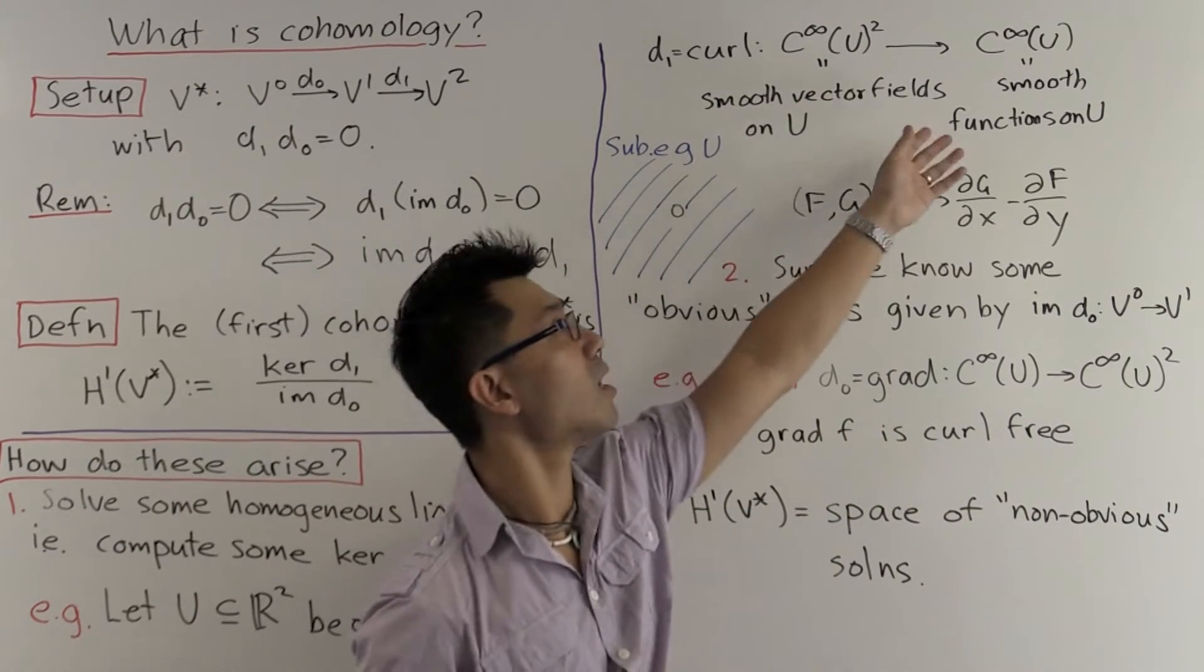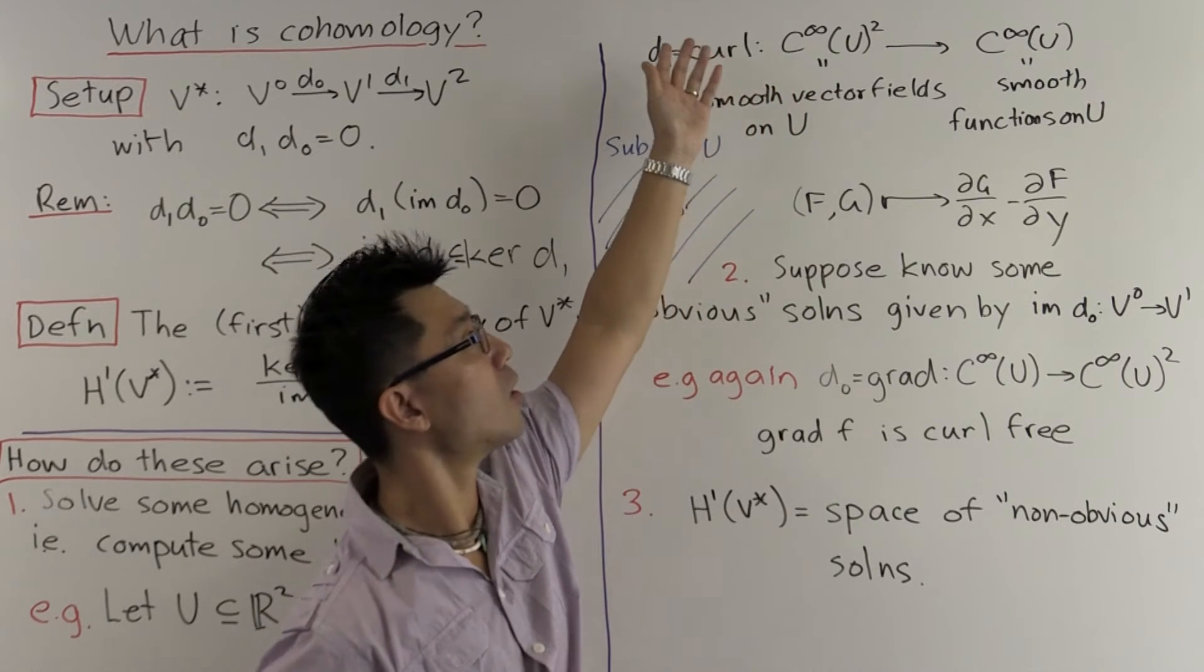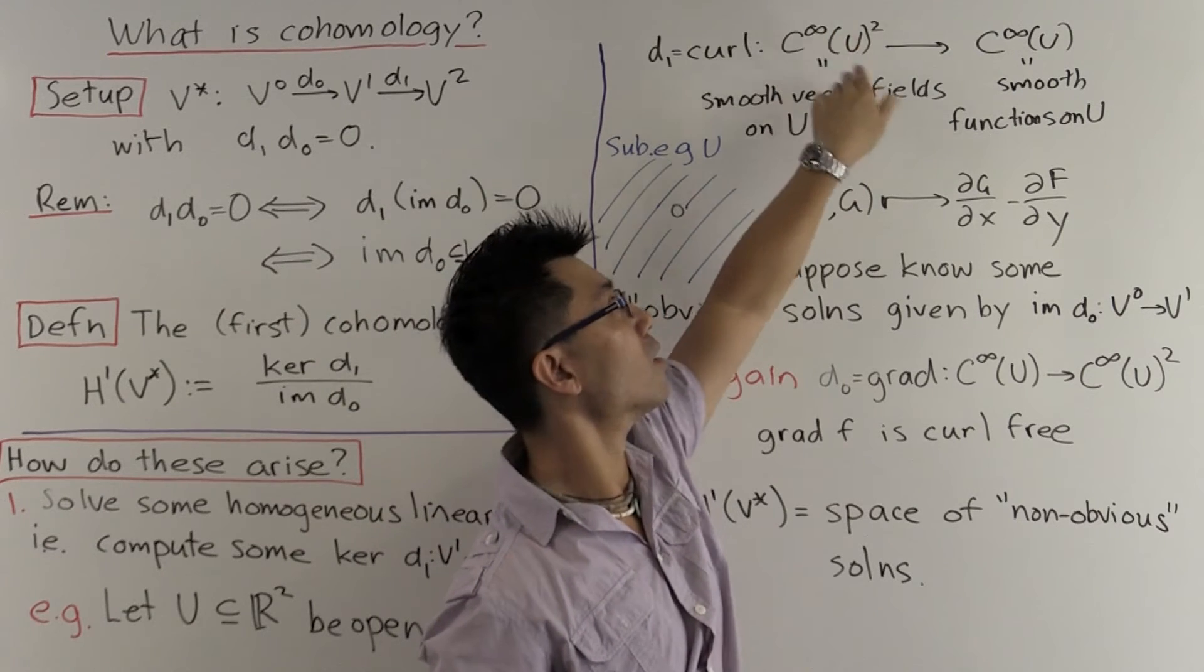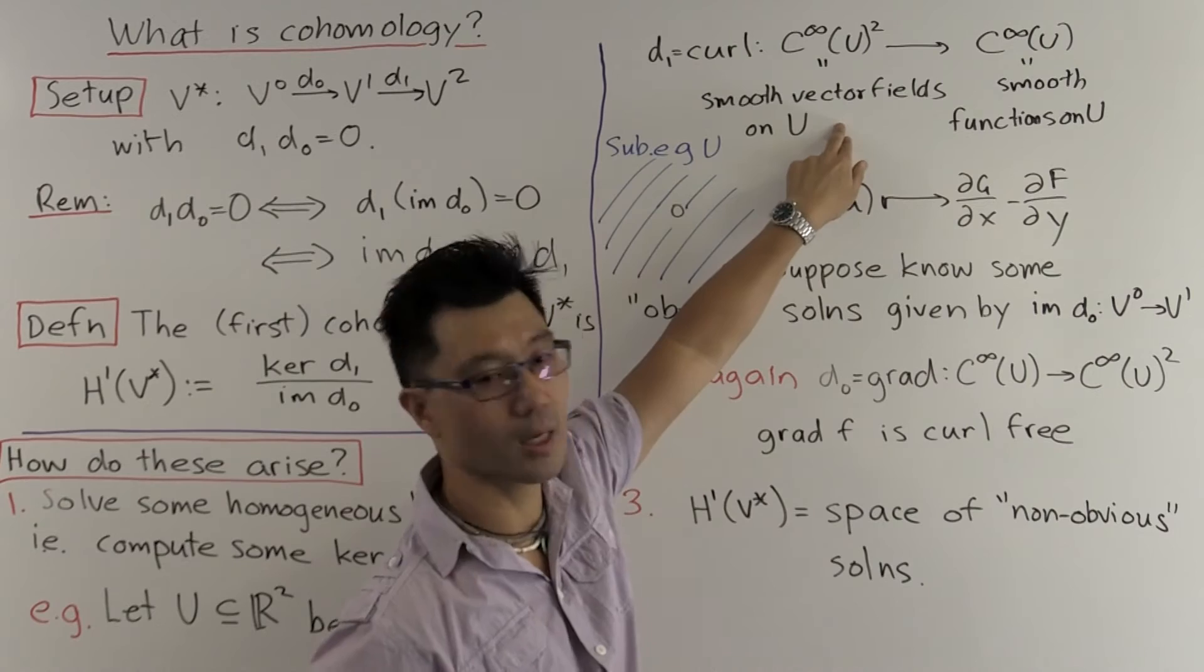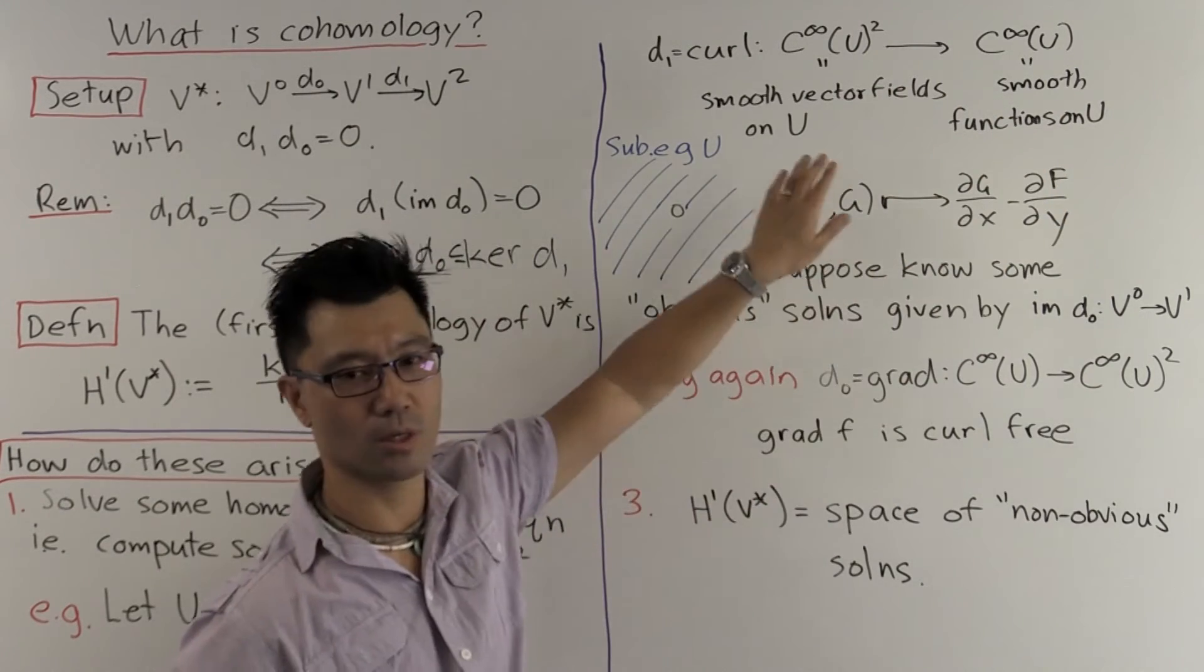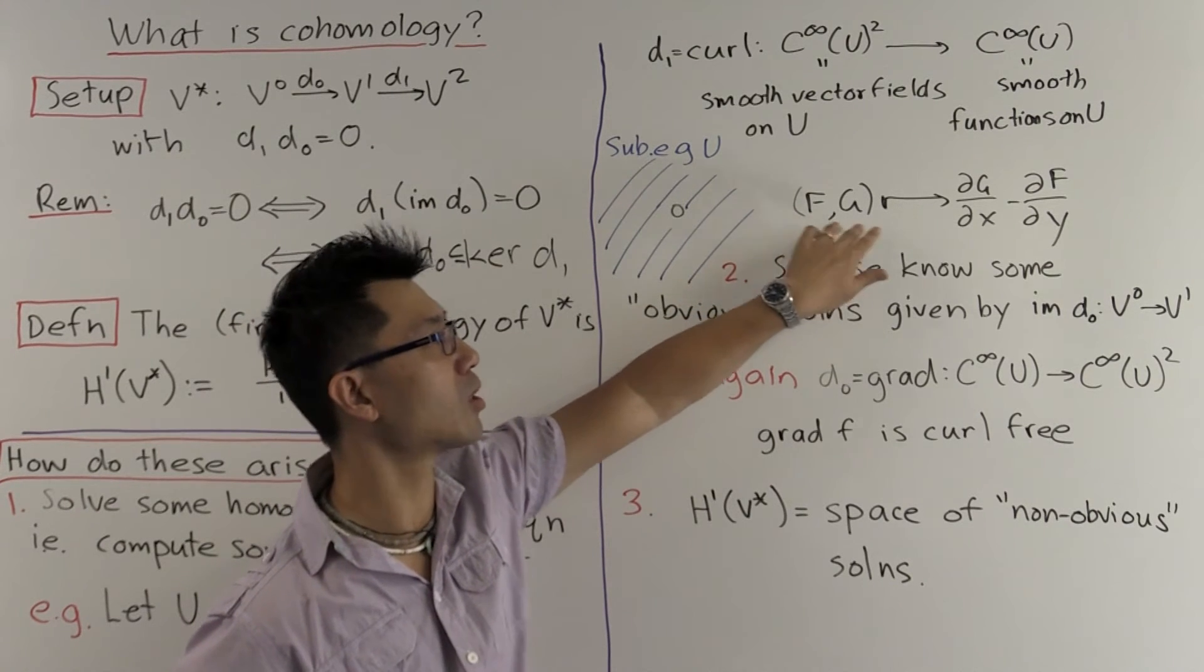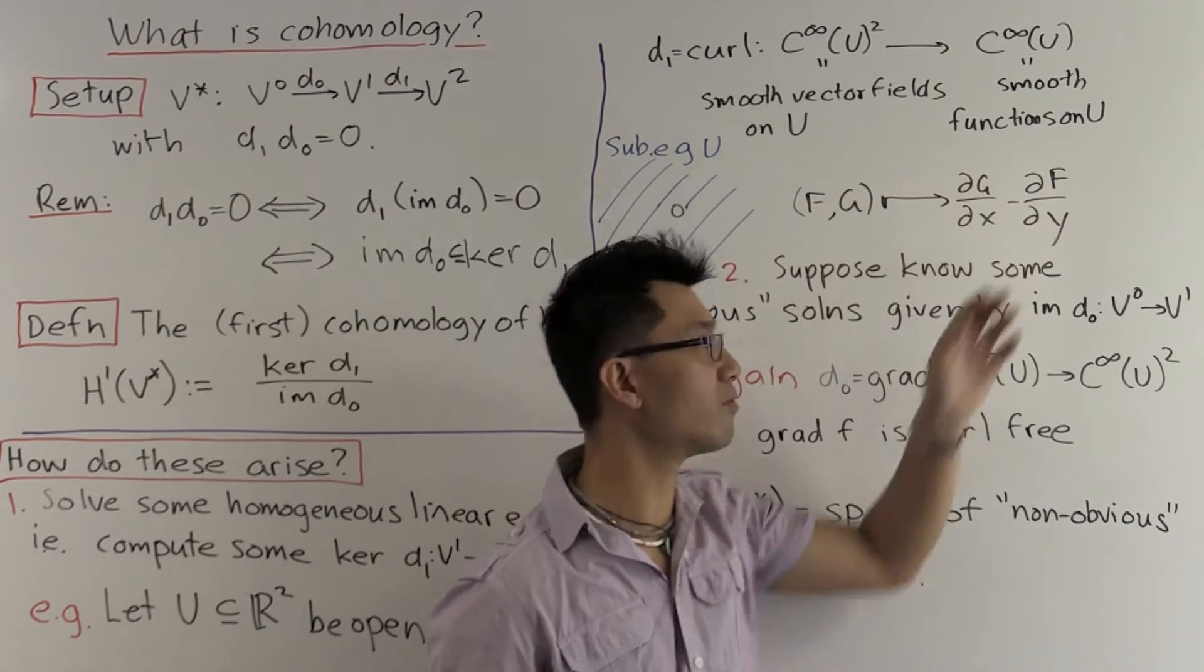Let U, a subset of R2, be an open set. And the vector spaces in the map we want to consider is the curl map. So you can take a smooth vector field on U. The space of all of them I denote by C infinity U to the 2. Take its curl to get a smooth function on U.